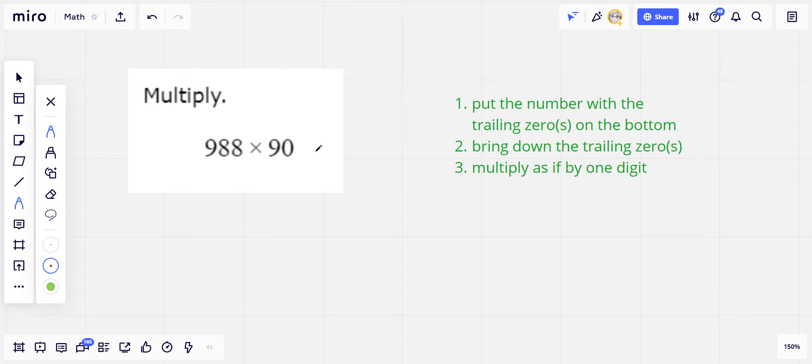Here we are working on some more multiplication problems with pretty big numbers. Here you see 988 times 90. We've got to figure out how to do that.